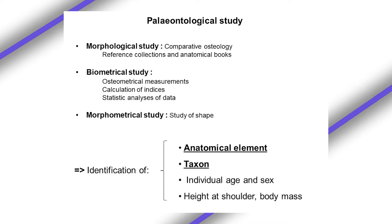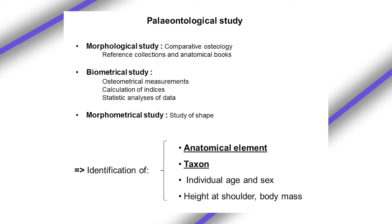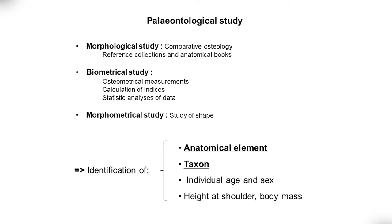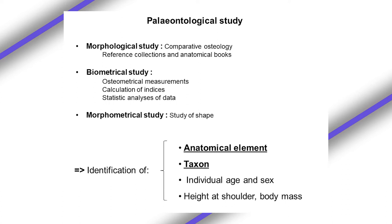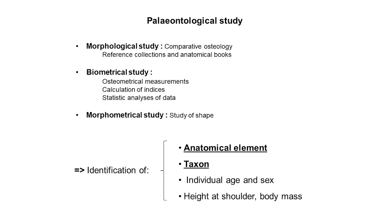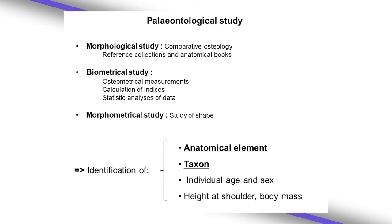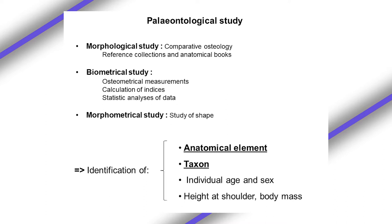Morphometry so far is mostly applied to more recent prehistory and paleoanthropology. The purpose is to identify the anatomical element, the taxon — notably the species — and individual information such as age (juvenile or adult), sex (male or female attribution), height at the shoulder, and also body mass, which I will return to later.